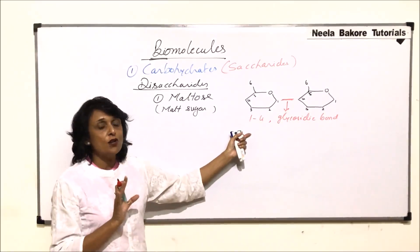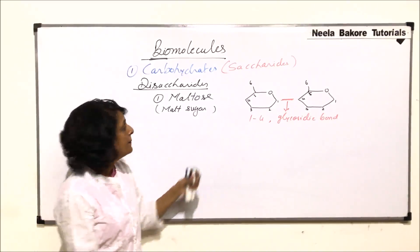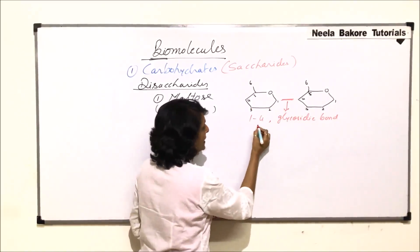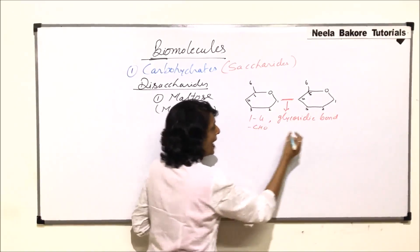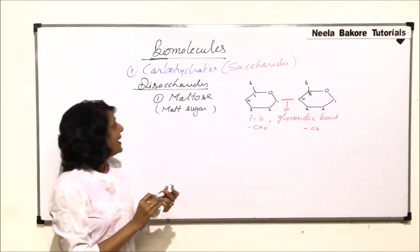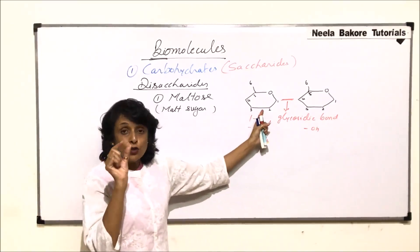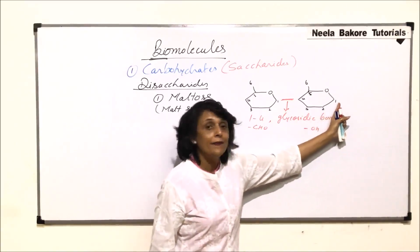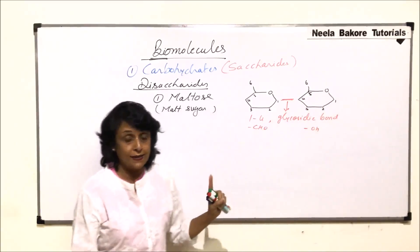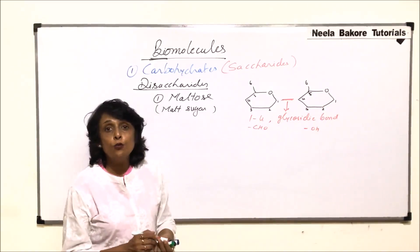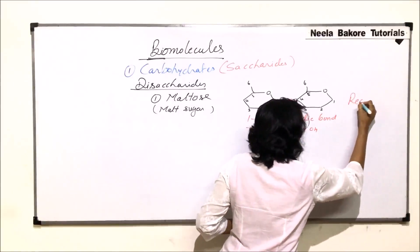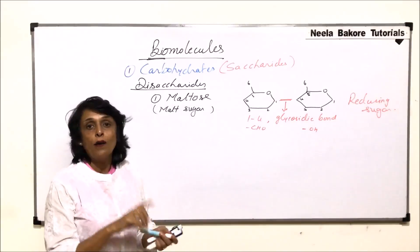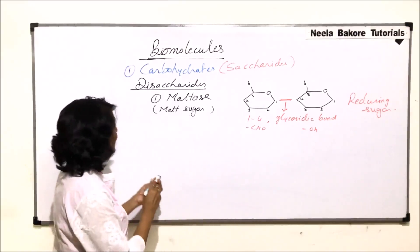During this bond, the functional groups that react are: carbon number 1 has aldehyde and carbon number 4 has OH. So it is the aldehyde of one glucose and the OH of the other. That means the reducing functional group — the aldehyde — is gone on one glucose. Whereas in the other glucose molecule, there is an intact aldehyde group. That means this disaccharide has reducing power, so maltose is a reducing sugar, because the reducing functional group on one of the glucose molecules is intact.